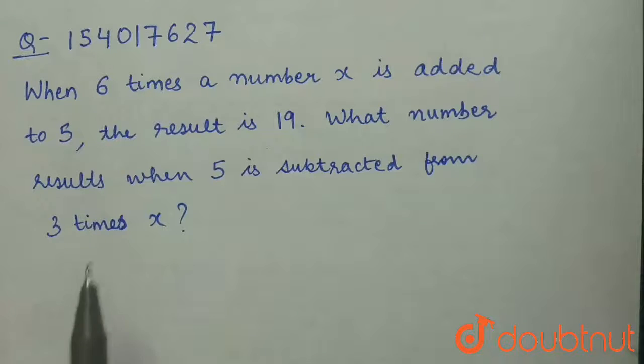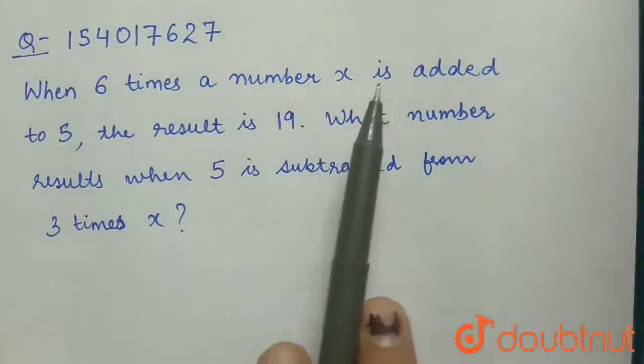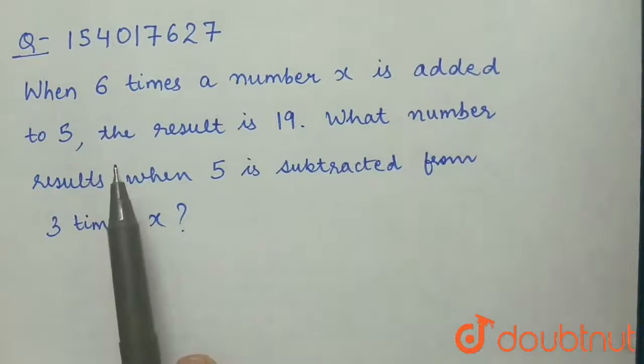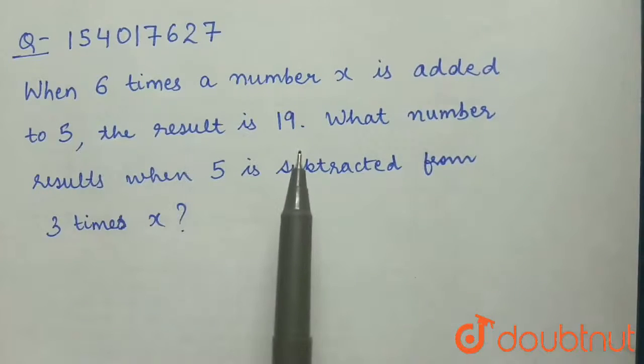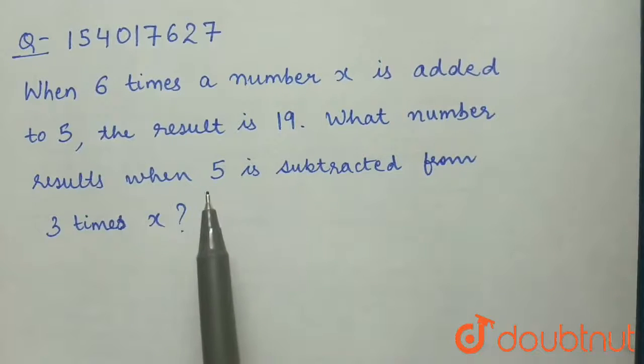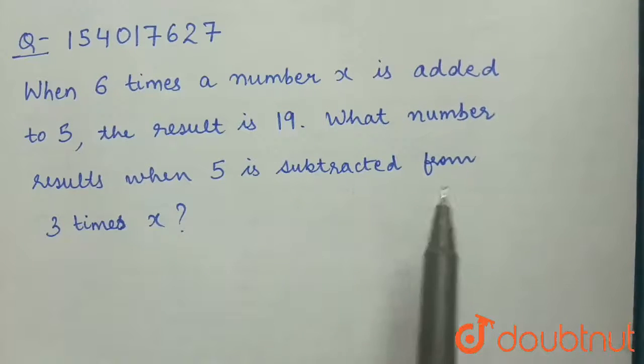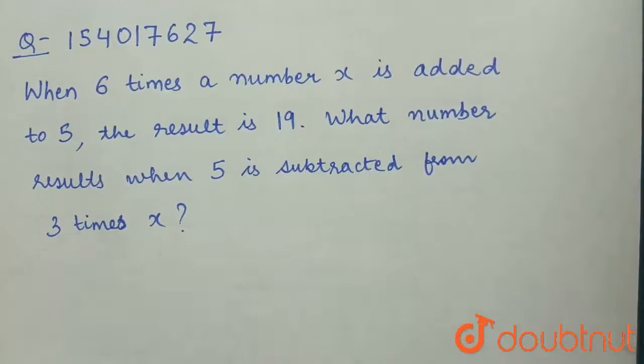Our question is: when 6 times a number x is added to 5, the result is 19. What number results when 5 is subtracted from 3 times x?